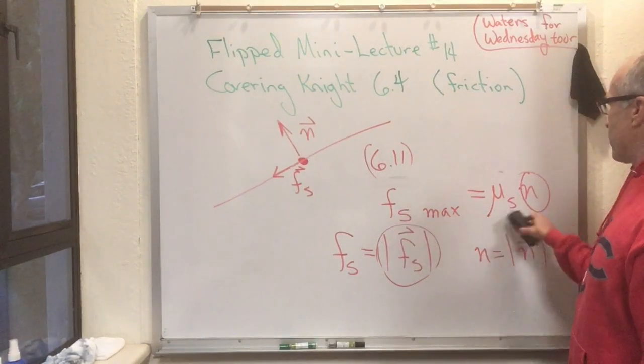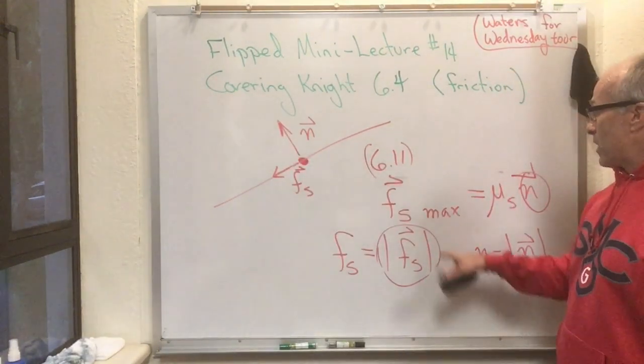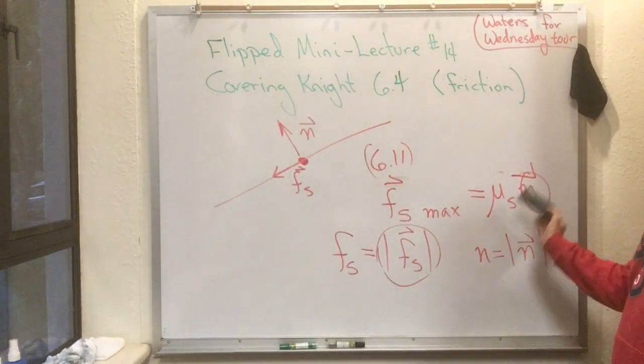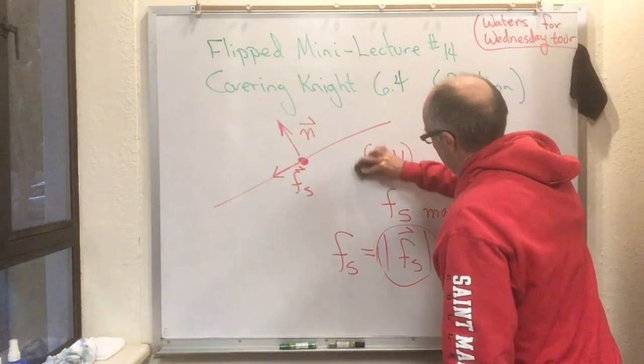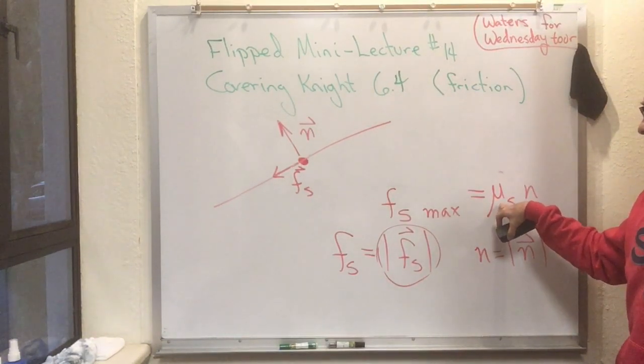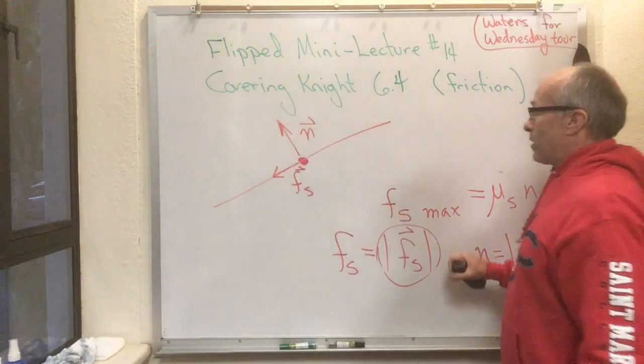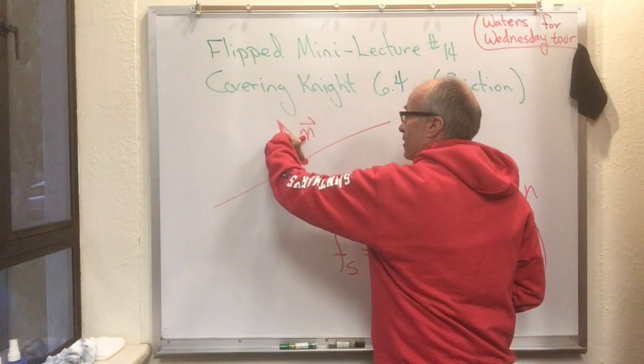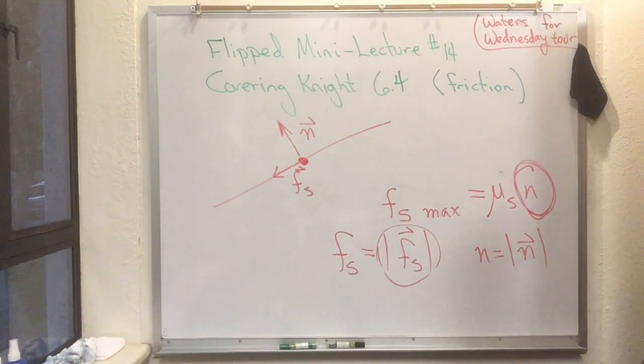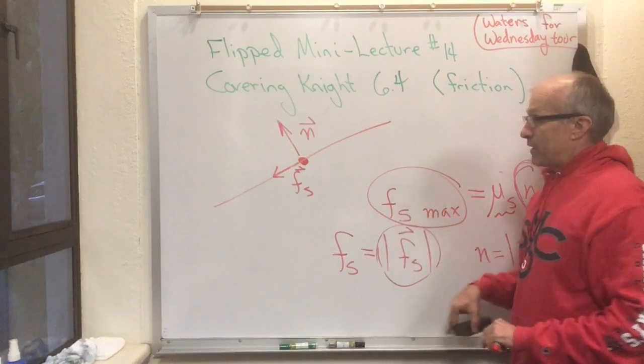So this equation, fs max equals μs times n, is definitely not to be confused with some equation like that, which wouldn't even make sense. fs is a vector in the horizontal direction, and μs is a number, and n is a vector in the perpendicular direction. And there's no way that fs max can ever equal n. So what Knight is saying here is that the maximum amount of the static force is equal to something that he calls the coefficient of static friction times the magnitude of the normal force. In other words, the harder the block is pushing against the plane, and the harder the plane is pushing back against the block, that is, the bigger this number is right here, and this is a constant, then the greater the maximum amount of static friction that this situation can generate is.